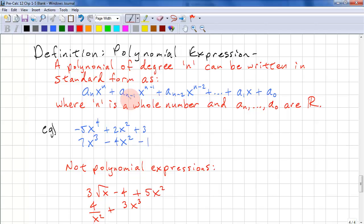And the an and an minus 1, an minus 2, those are just the coefficients. The coefficients are integers. They have to be integers. n has to be a whole number. So that means positive. We can't have negative exponents.